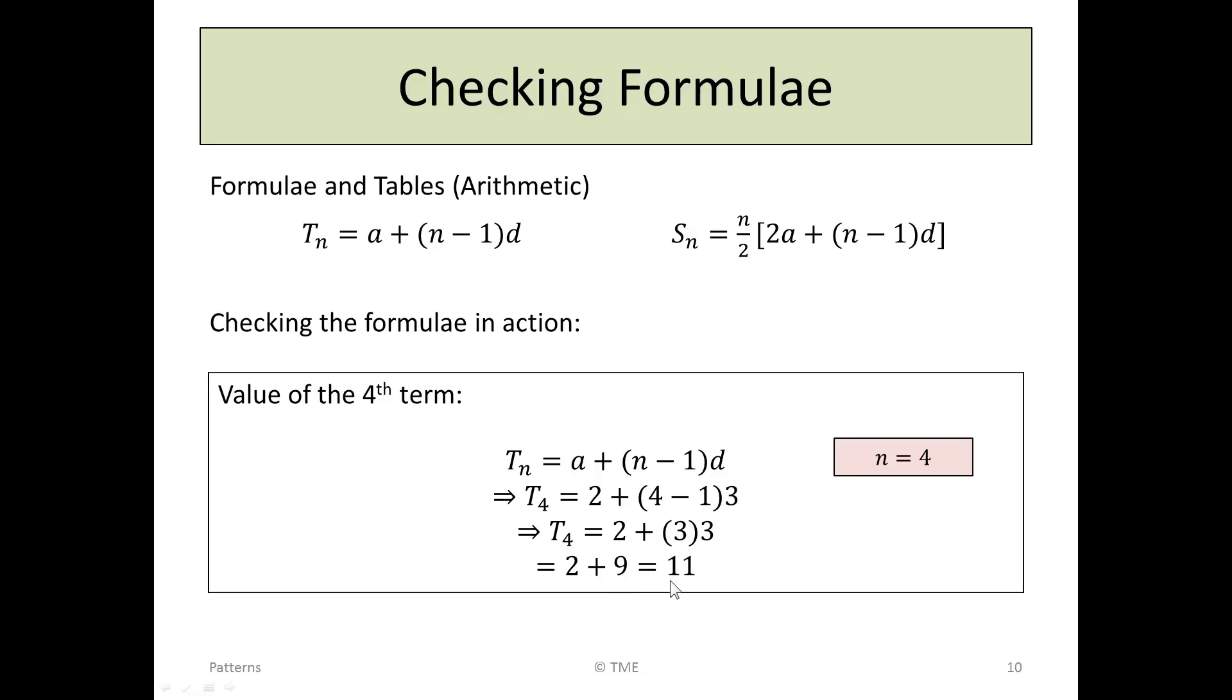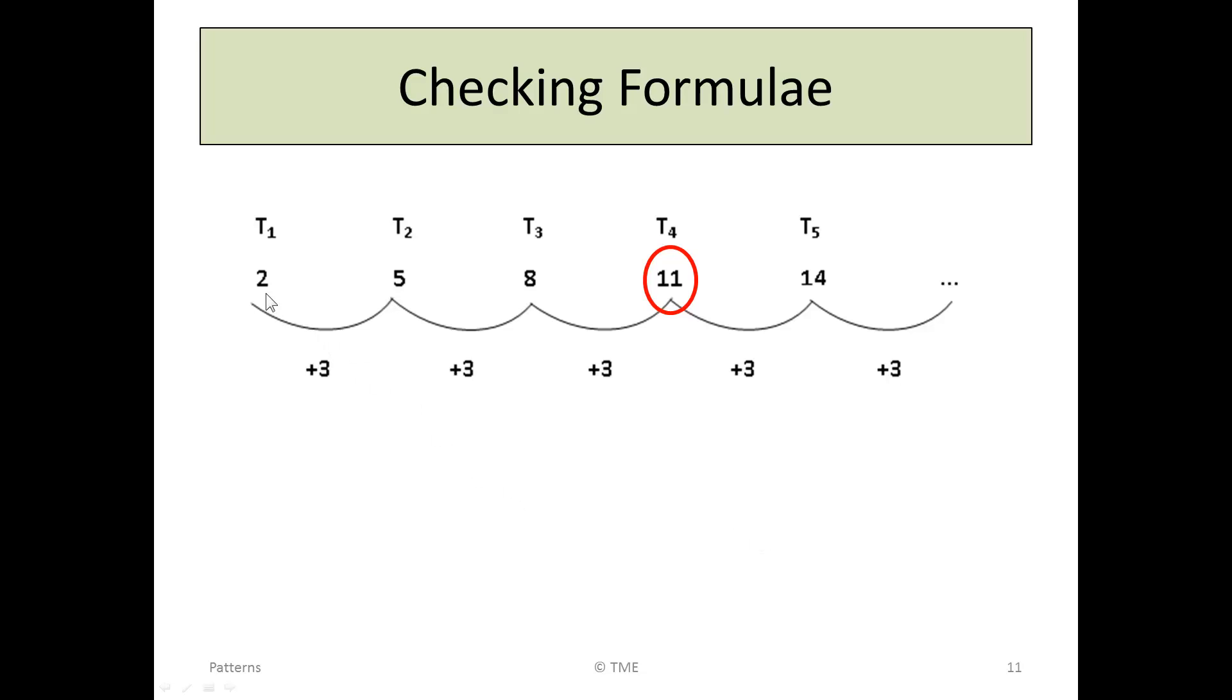If the formula is working, T4, the fourth term of our sequence, should be 11. Returning to our sequence, we had 2, 5, 8, 11, and the fourth term is 11, so the formula for the Tn appears to be working.